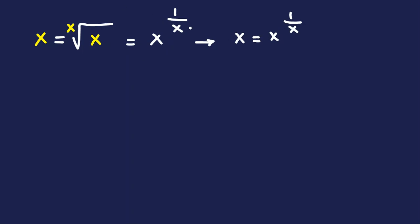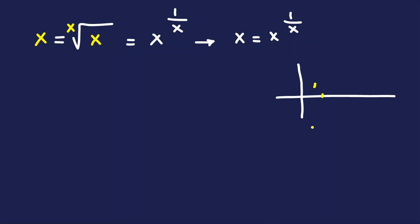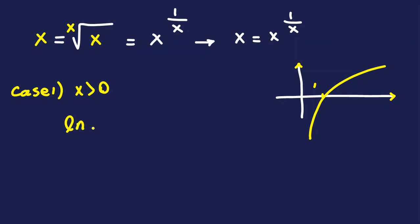When we see something like x to the power of 1/x — something in terms of x in the exponent — the idea is to take a logarithm (ln) from both sides. But we can only take ln when the argument is positive. Looking at the domain of ln, it is always positive real numbers, so we consider Case 1: x is positive. Taking ln of both sides gives: ln x = ln(x^(1/x)).